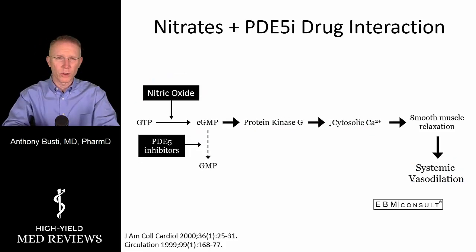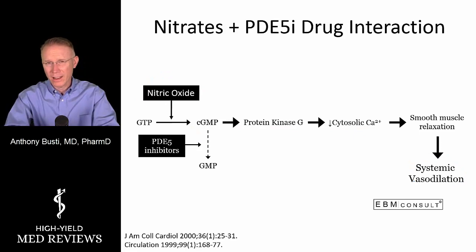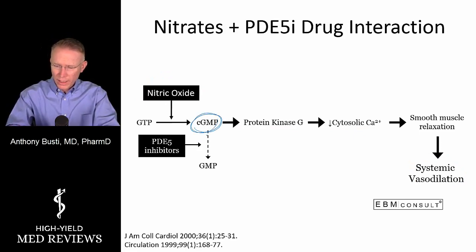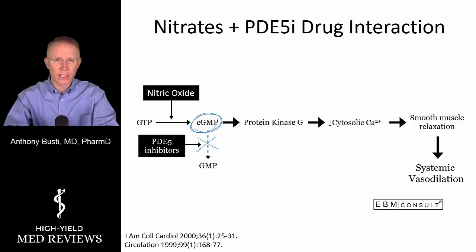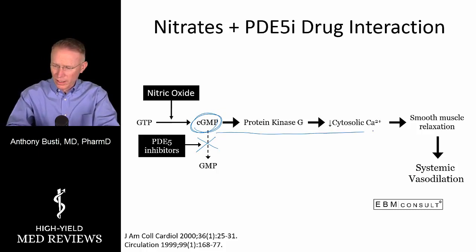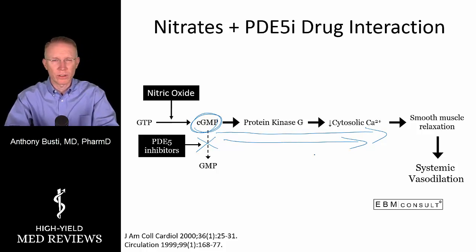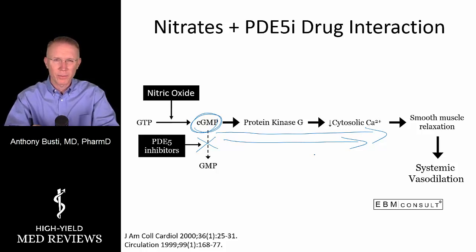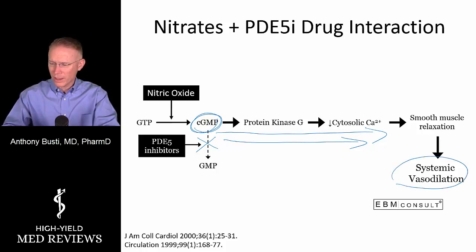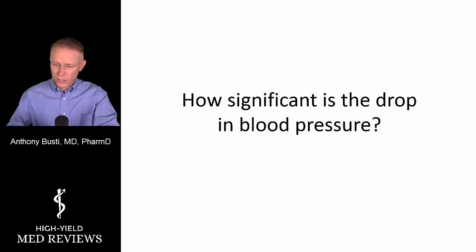The problem arises when you administer additional, higher-dose amounts of exogenous nitric oxide — driving up cyclic GMP that then cannot be broken down. You get a much larger degree of reduction in cytosolic calcium, not only locally in penile blood vessels, but systemically throughout the body. This systemic vasodilation, if significant enough, can put patients into shock.